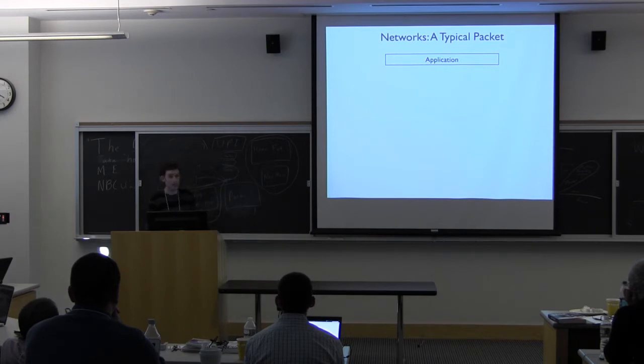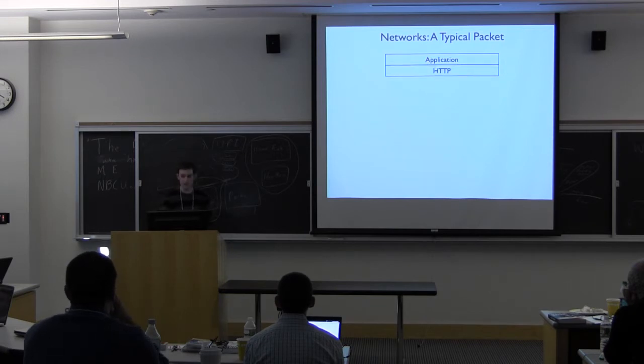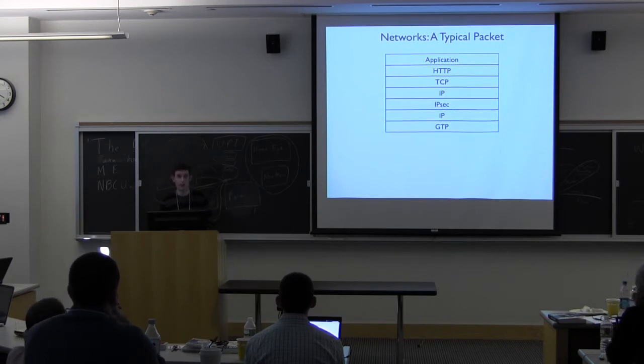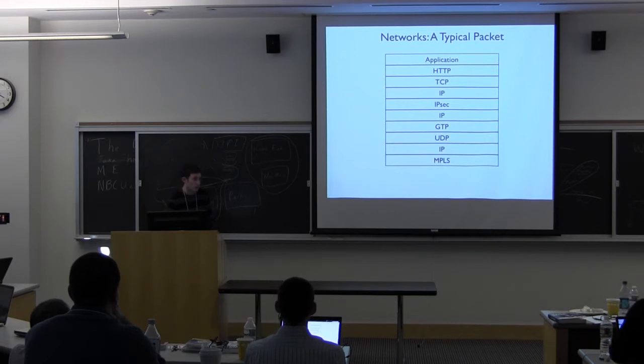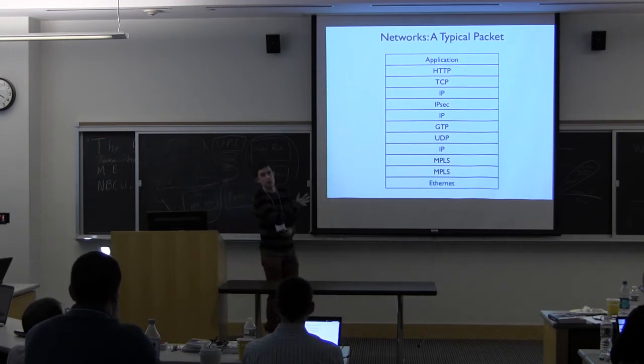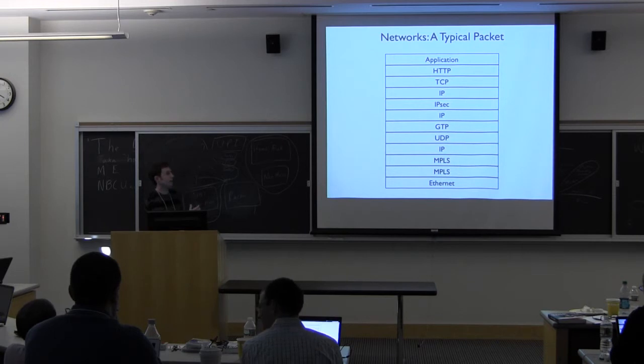Here we see the application protocol, the innermost layer, being tunneled across HTTP, which runs on TCP, which runs on IP, which in this case was running on IPsec, which was tunneled over IP, which was tunneled over the general tunneling protocol, which uses UDP, which needs IP, which was being carried over MPLS, tunneled through MPLS, wrapped in an ethernet packet. This is a real packet. This is typical. It's 12 layers deep. This is pretty far away from the OSI model. This is the kind of mess that we get ourselves into with layering and containers and modular systems.